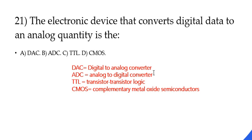Question 21: What is the electronic device that converts digital data to an analog quantity? You're given four devices. The very first one is DAC — it's right in the name: DAC stands for Digital-to-Analog Converter. So therefore the answer is A.